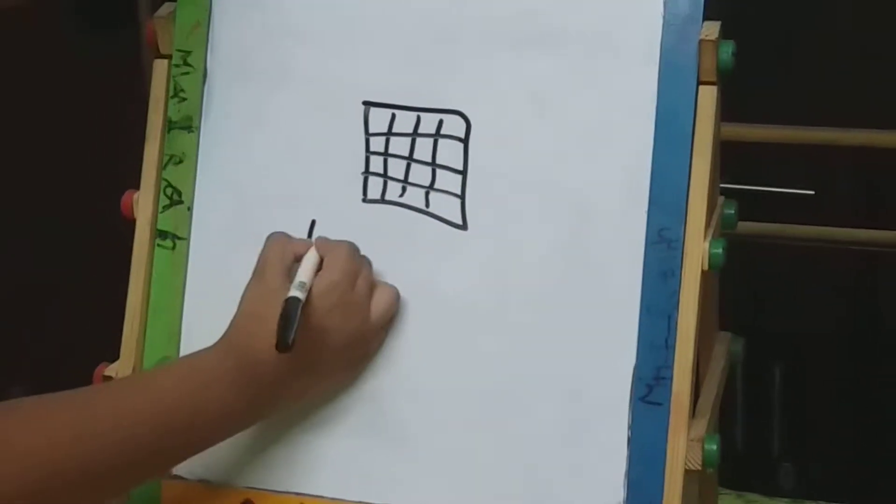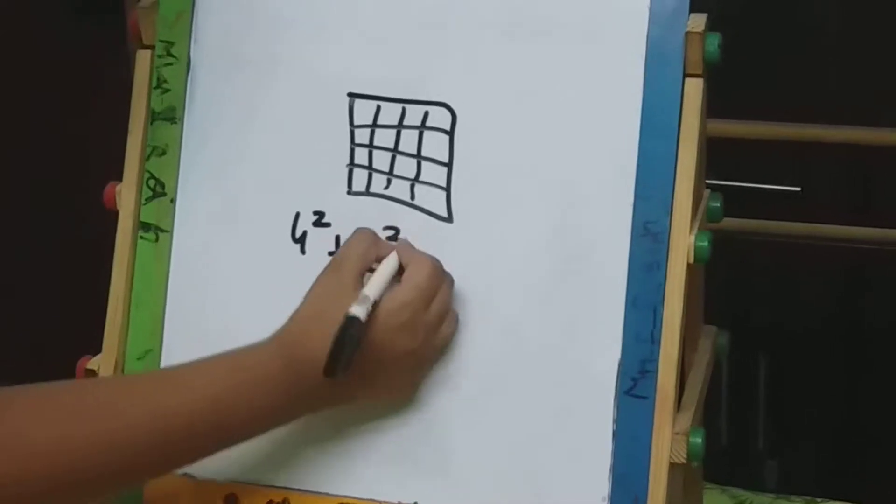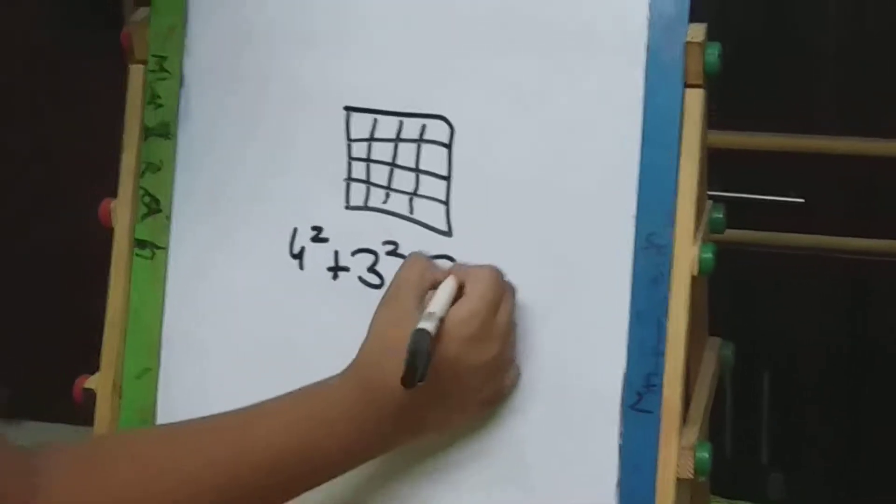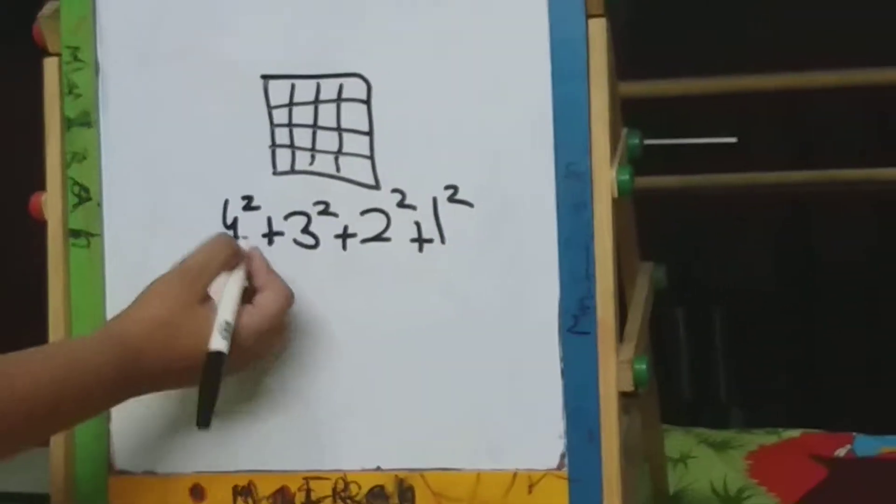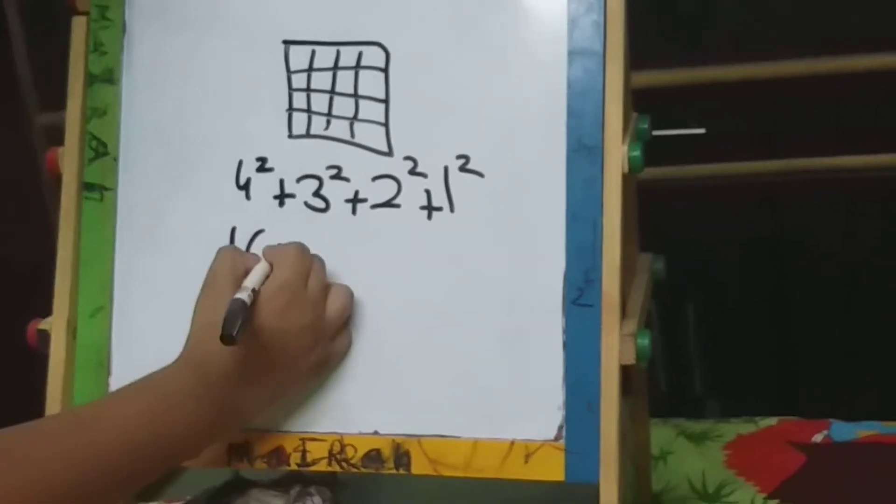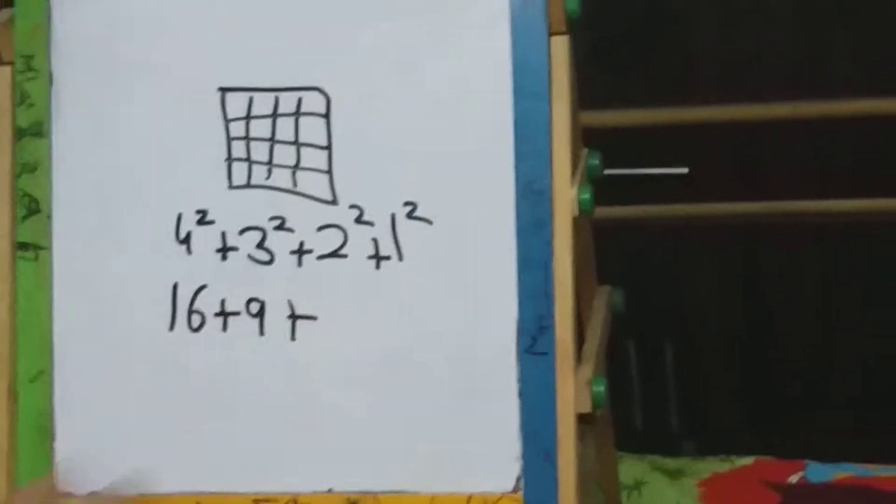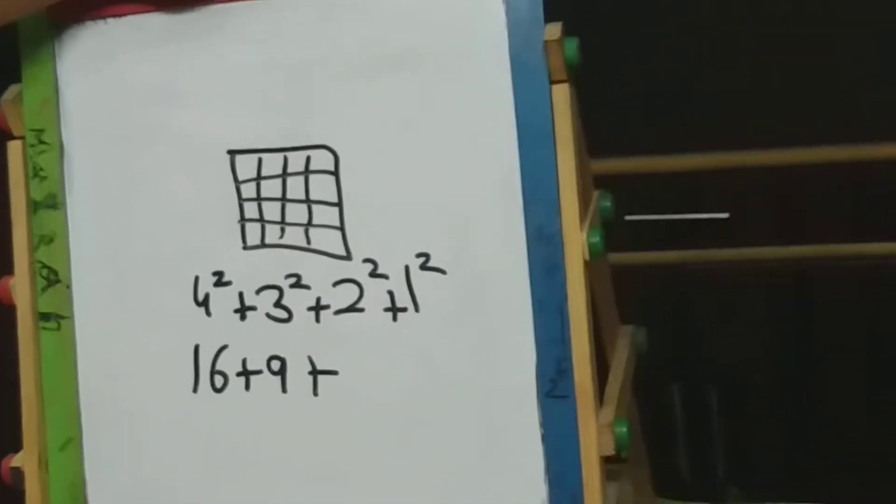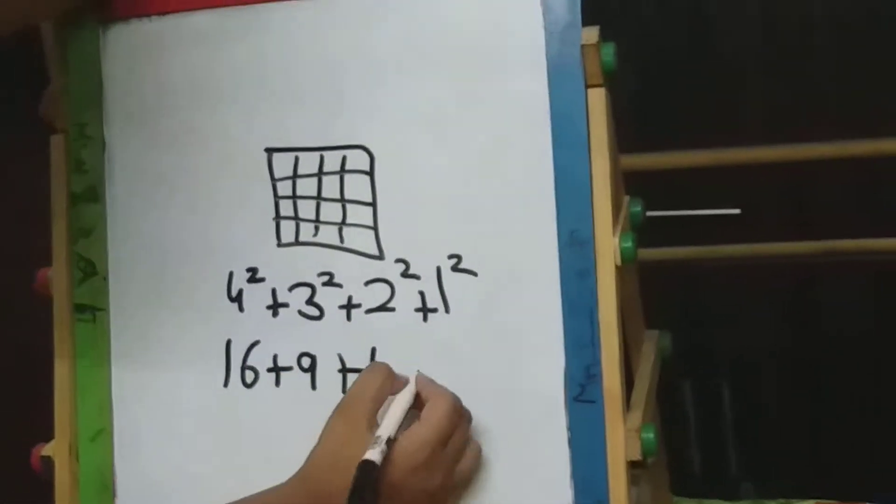So first we will teach you 4 square plus 3 square plus 2 square plus 1 square. So 4 into 4 is equal to 16 plus 3 into 3 is equal to 9 plus 2 into 2 is equal to 4 plus 1 into 1 is equal to 1.